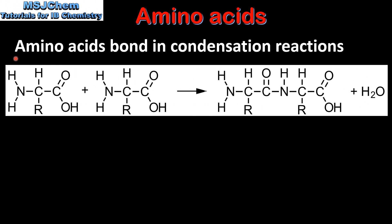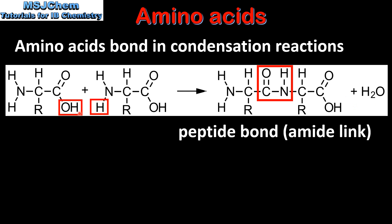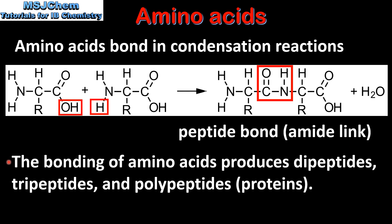Next we look at the bonding between amino acids. Amino acids bond in condensation reactions. Here we have two amino acids reacting together in a condensation reaction to produce a dipeptide and a molecule of water. The water molecule is formed from the OH group on one amino acid and the hydrogen atom on another amino acid. The bond between the two amino acids is called a peptide bond or an amide link. The bonding of amino acids produces dipeptides, which are composed of two amino acids, as well as tripeptides and polypeptides, which are also called proteins.